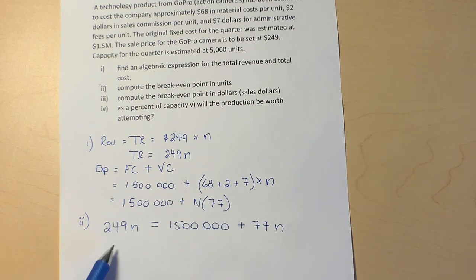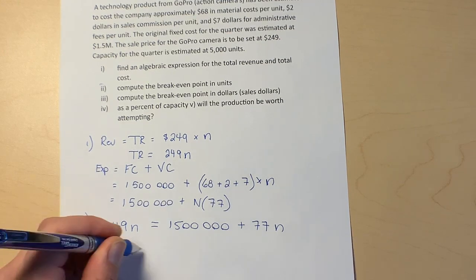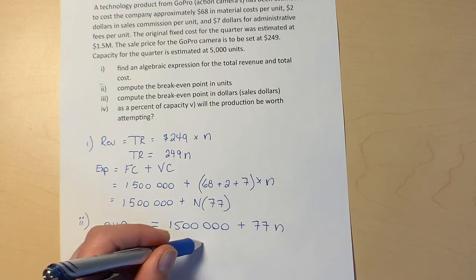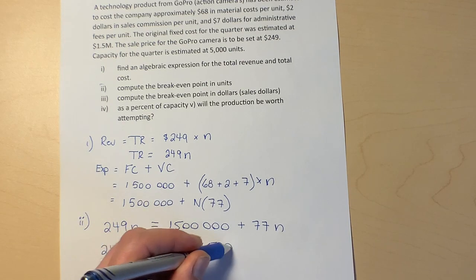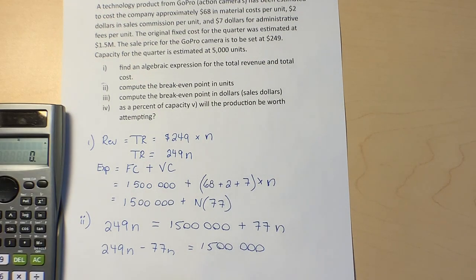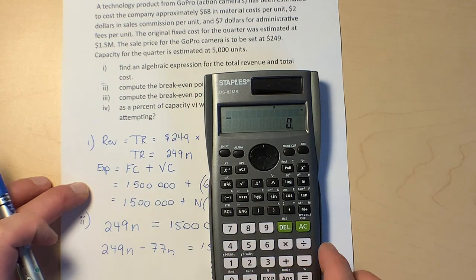I'm going to move this term with the n over the equal sign to join this other term with the n. When it comes over the equal sign, remember it turns to a negative, so 249n minus 77n equals 1.5 million. We can do some subtraction there. Calculator, so I'm going to go 249 minus 77.